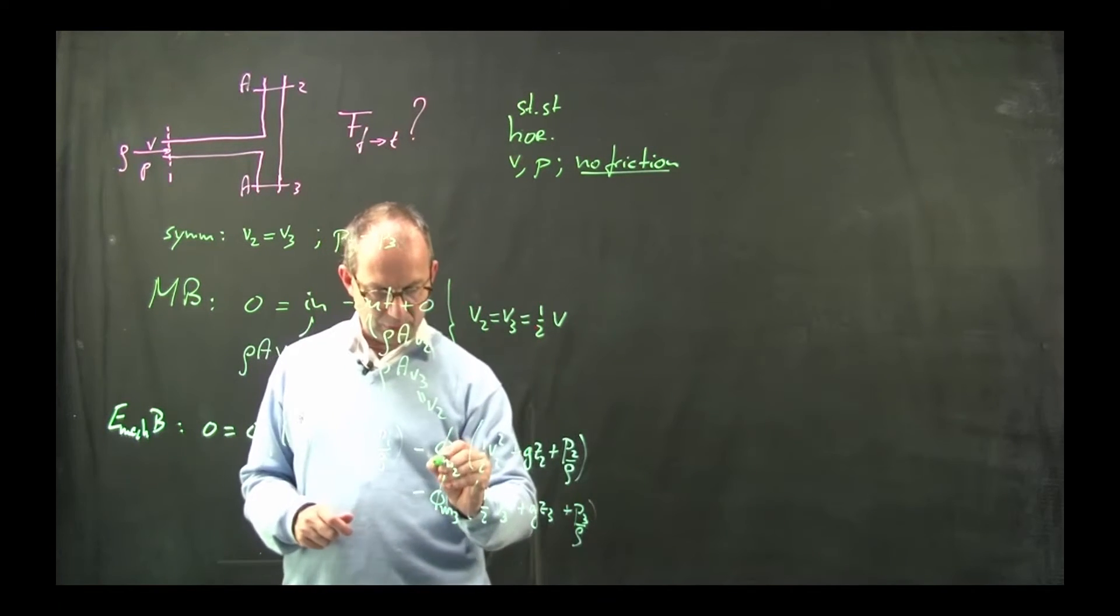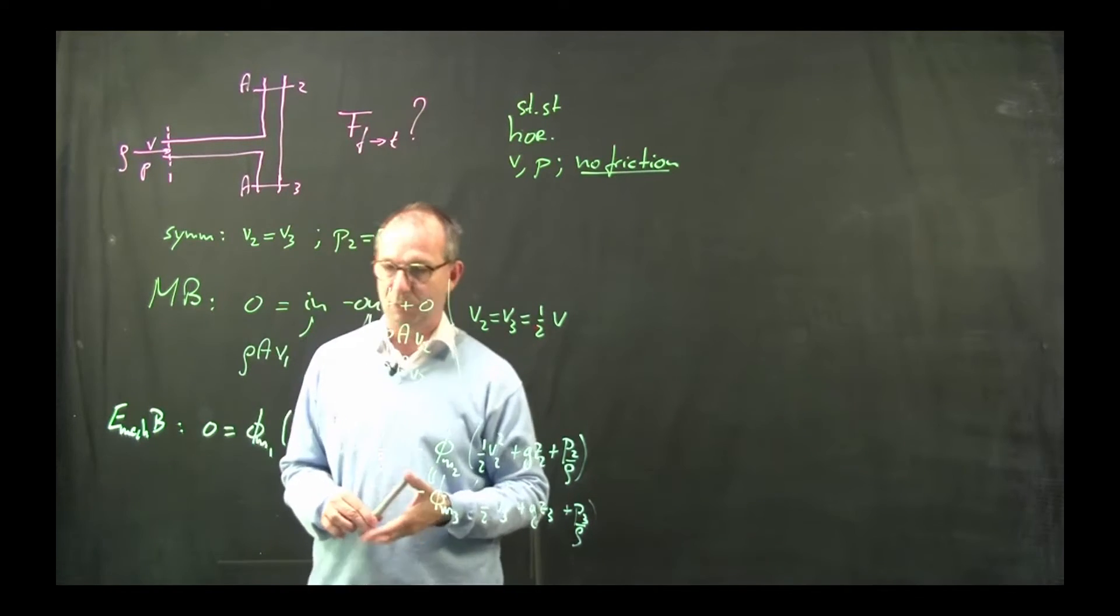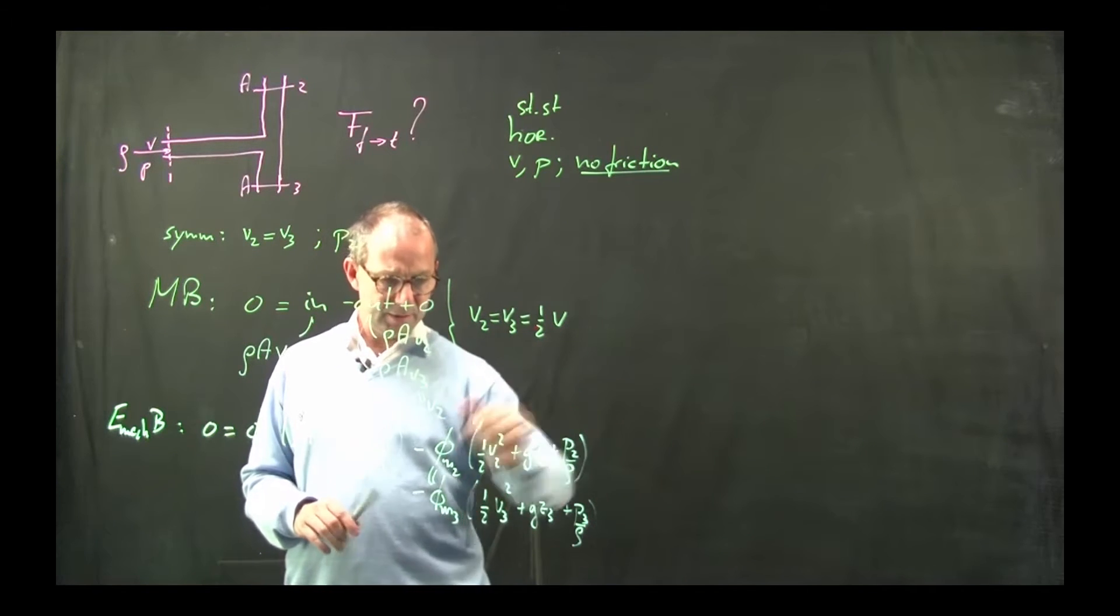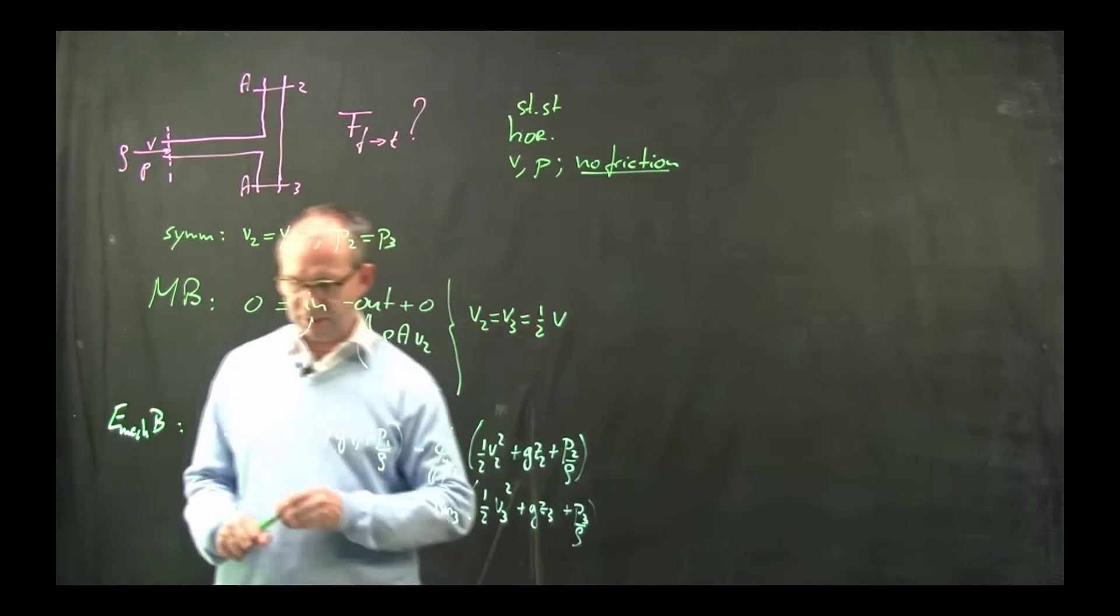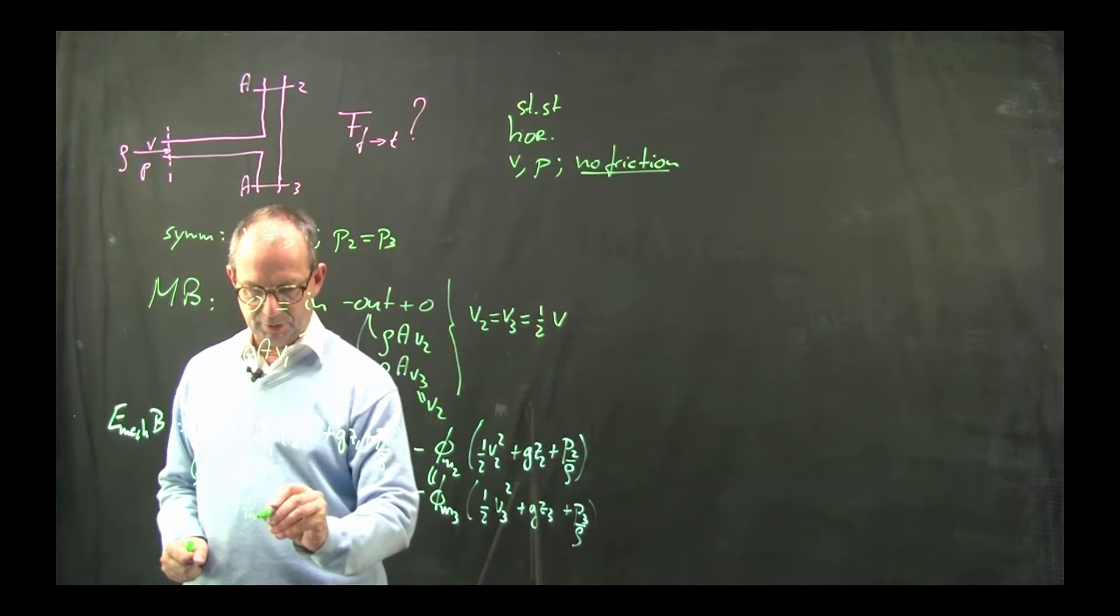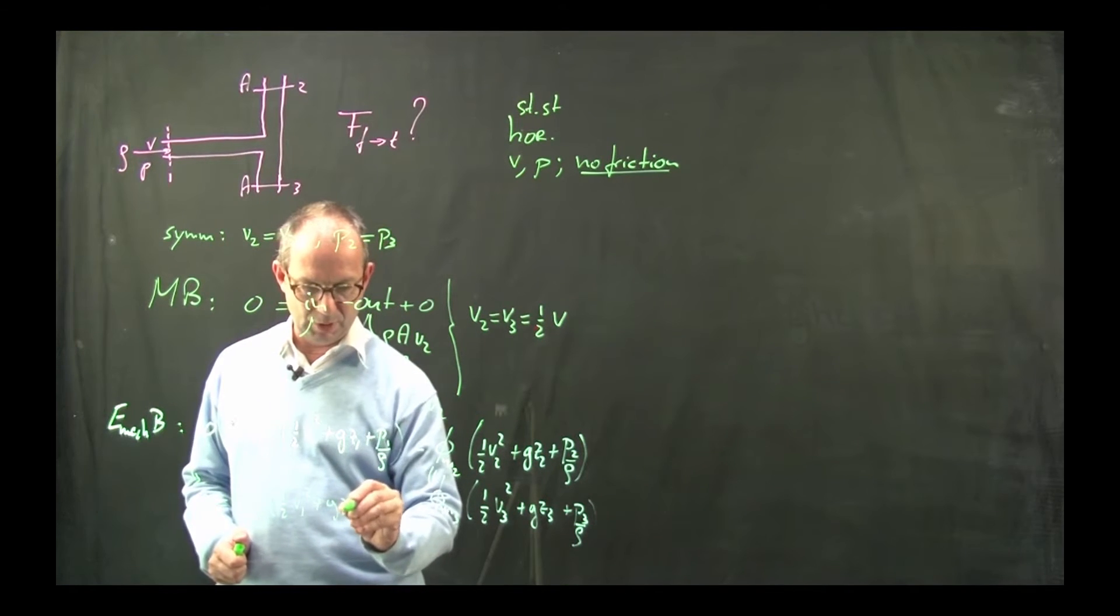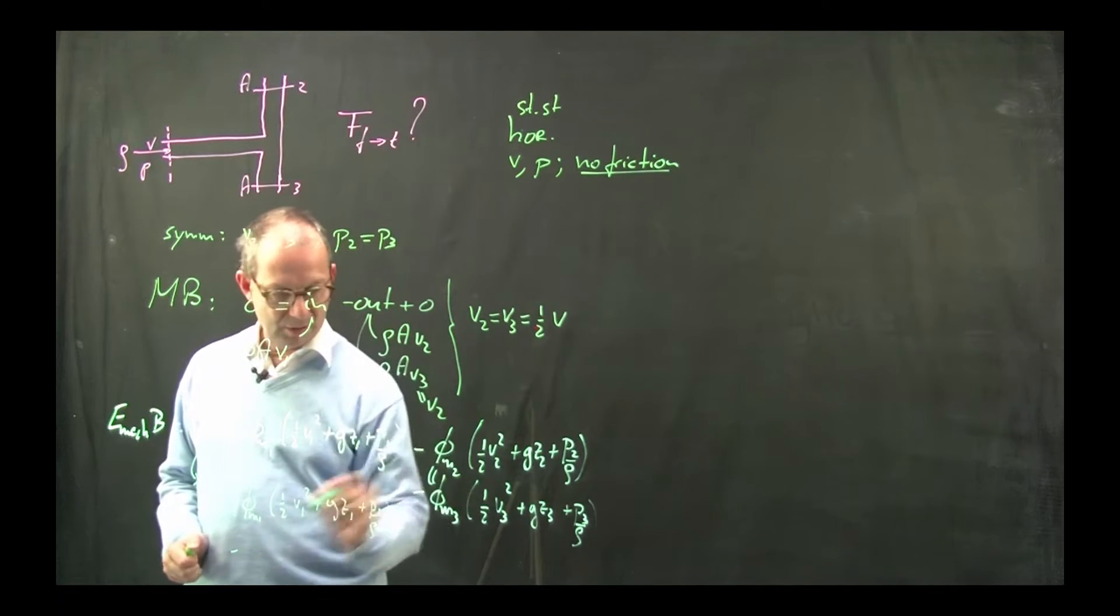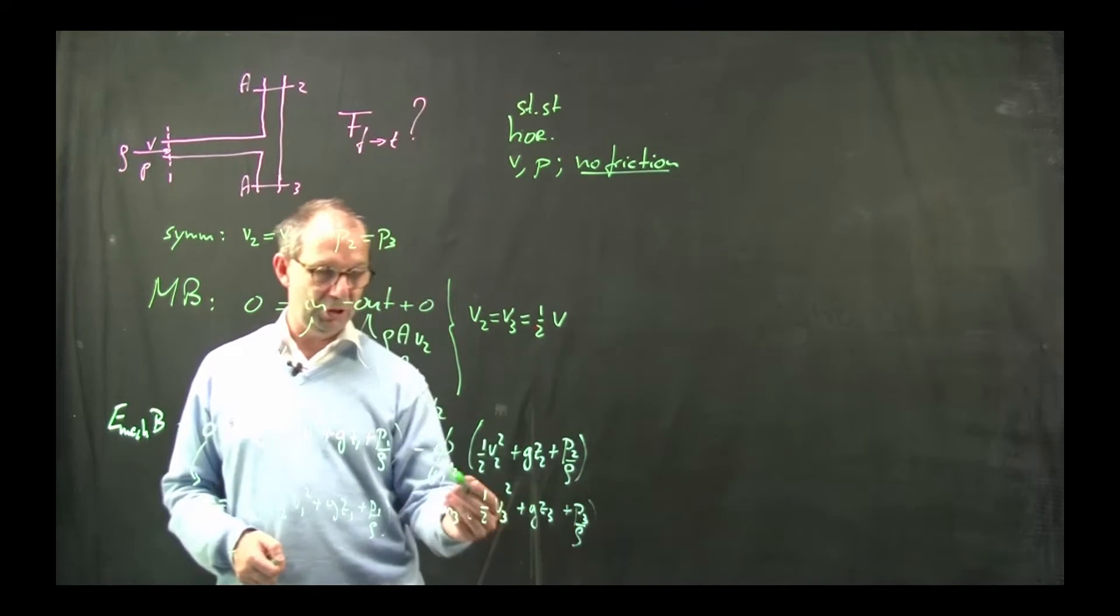At 2 where I label everything with a subscript 2. gz2 plus p2 over rho. It's water so the density doesn't need a label. And there is a second outflow where everything is labeled 3. First, these two are equal. Due to symmetry or I computed that here based also on symmetry of course.